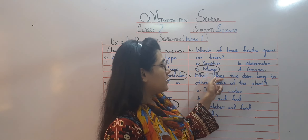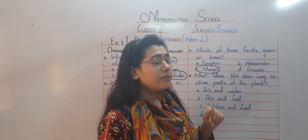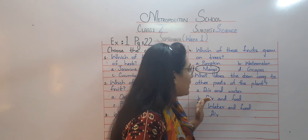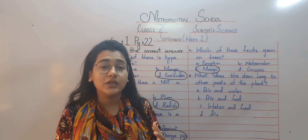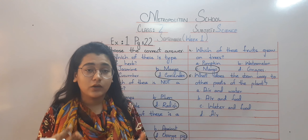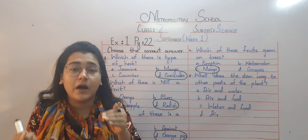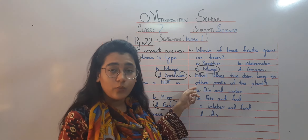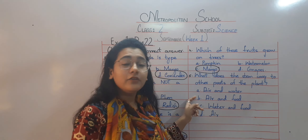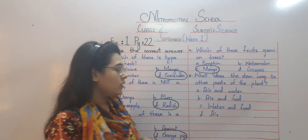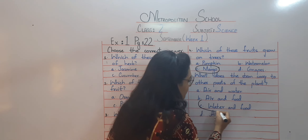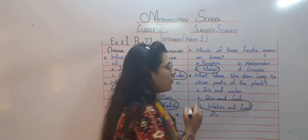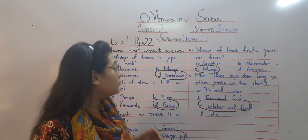Number five: what does the stem carry to other parts of the plant? The options are air and water, air and food, or water and food. As we have discussed, the stem carries water and food to other parts of the plant.